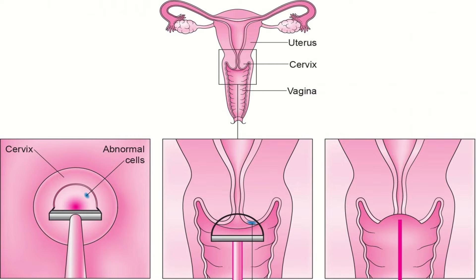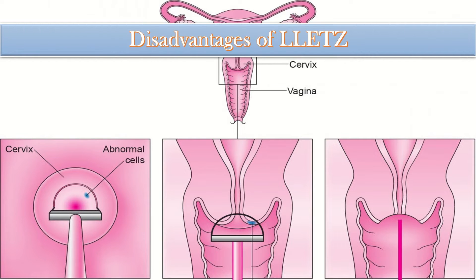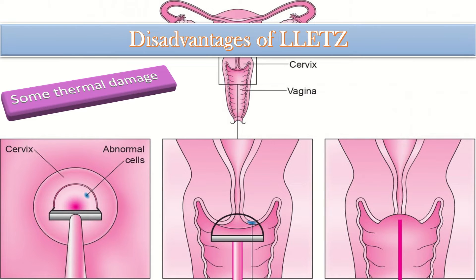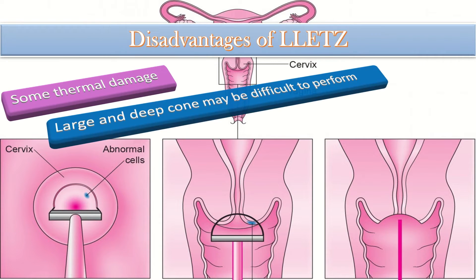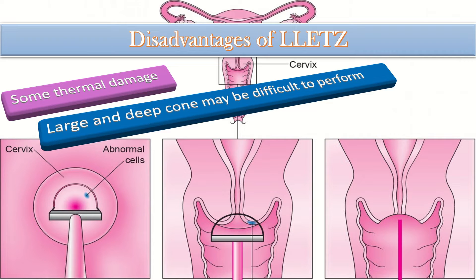What are the disadvantages of large loop excision of the transformation zone? These include some thermal damage. Additionally, a large and deep cone may be difficult to perform in an office setting, and can result in more thermal damage if a second loop excision is required.